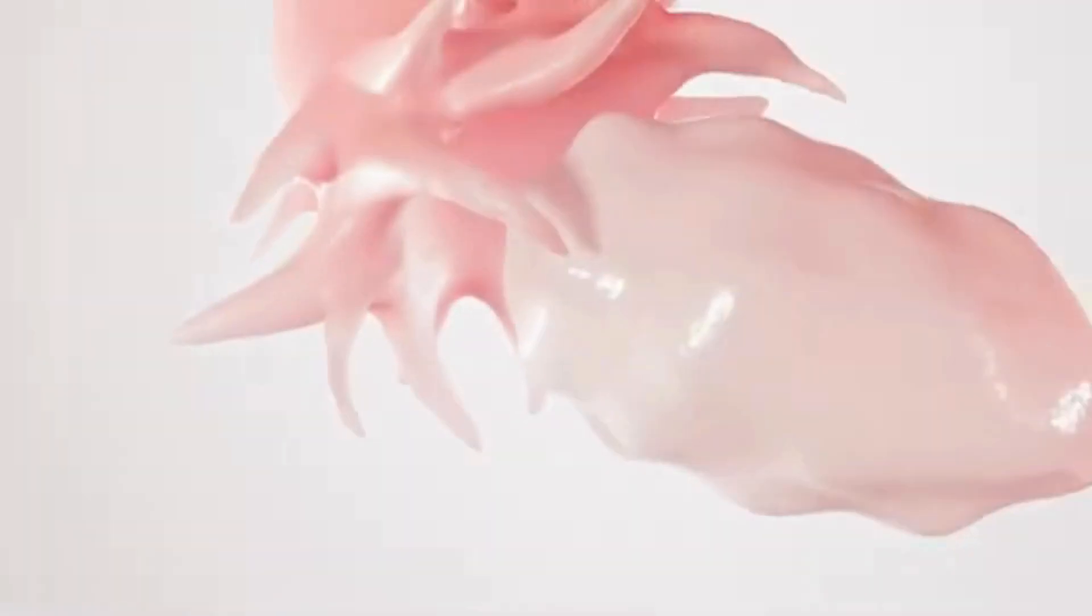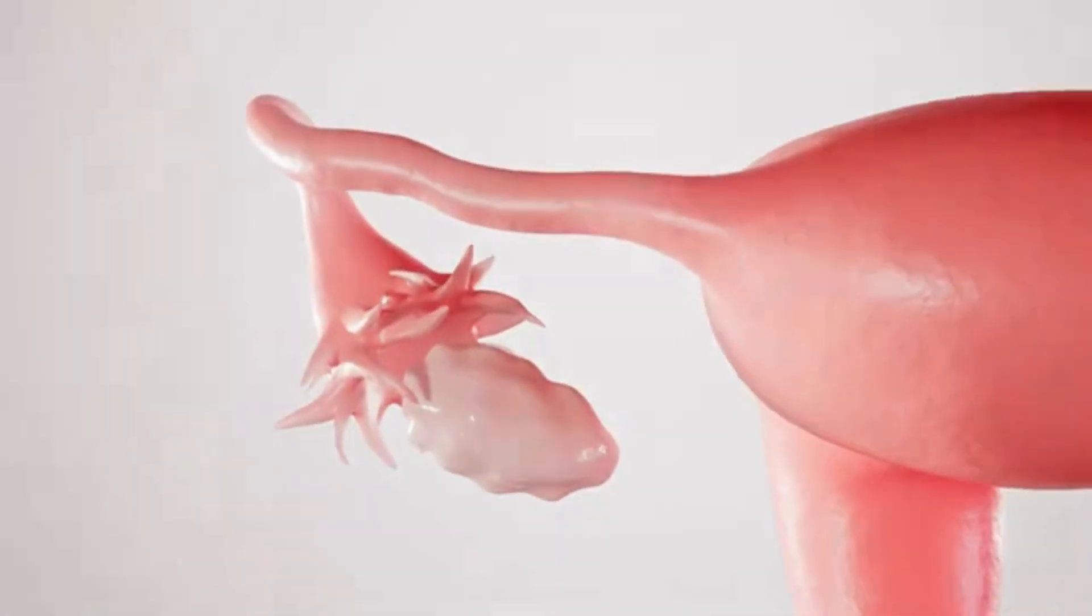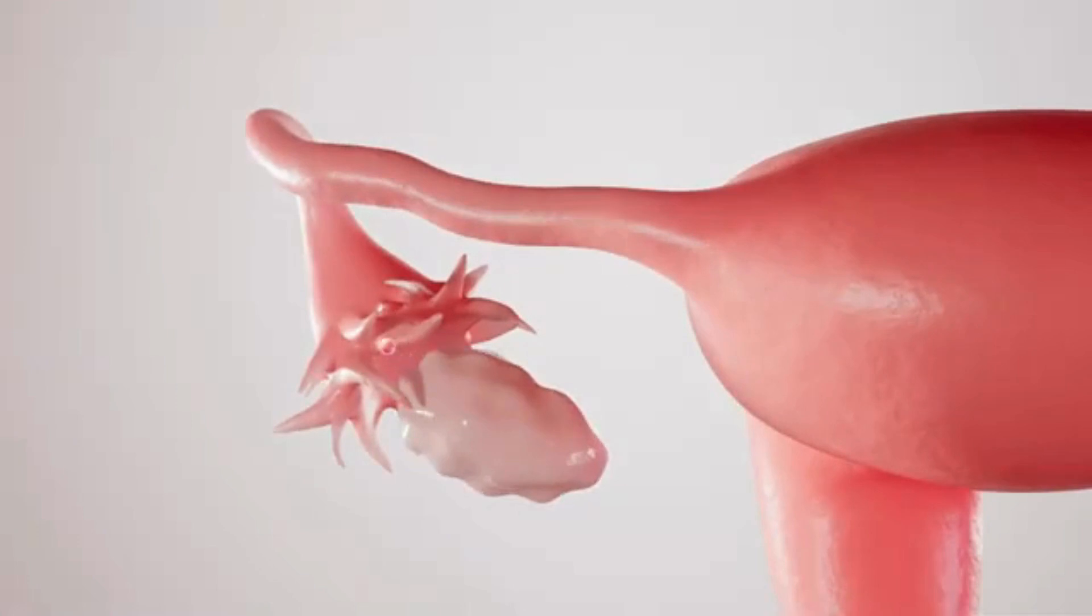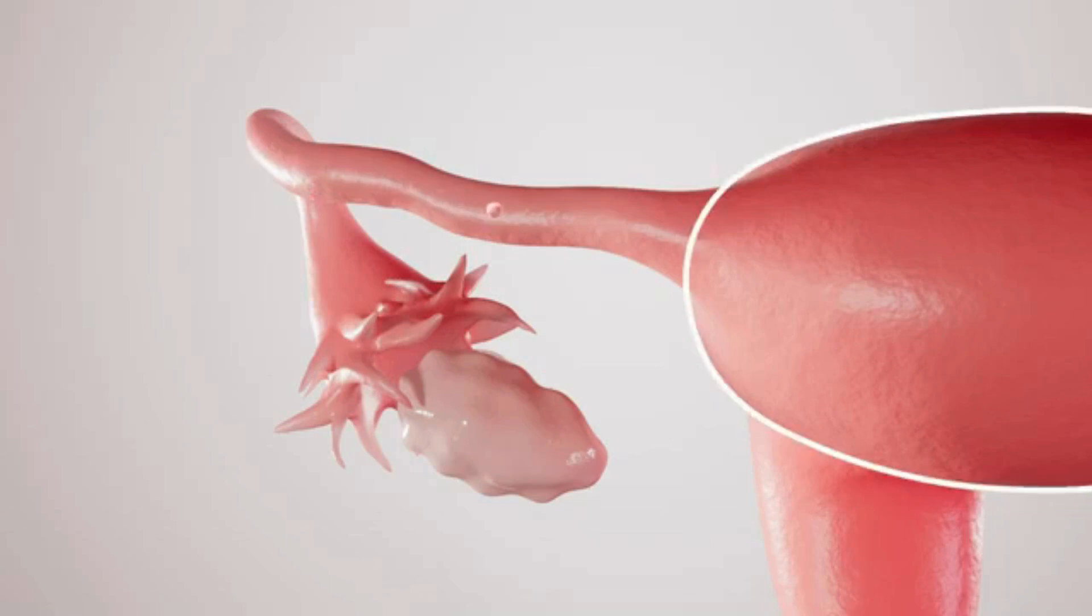At the release of the egg, otherwise known as ovulation, the third phase begins. During ovulation, the mature egg is released from the ovary. It is then swept into the uterine tubes by finger-like projections called fimbriae. There it will travel toward the uterus.